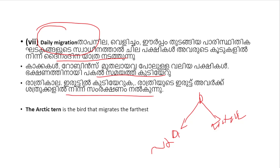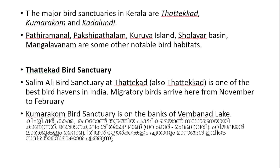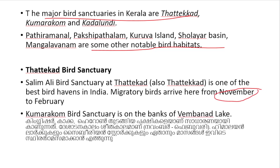The bird that migrates the farthest is associated with Kerala. This is also called the Salimali Bird Sanctuary. Migratory birds arrive here from November to February.